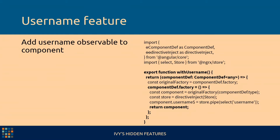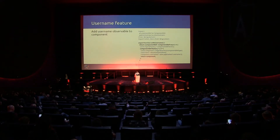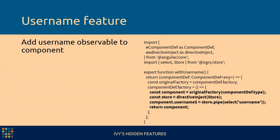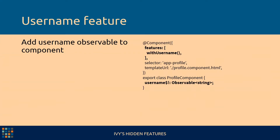Here's a simple one. We want to add the user name as an observable property to a component, so we create this feature. A feature is a function that returns another function that takes the component definition as a parameter — which is also a new thing from Ivy. A lot of these features will just wrap the component factory and add some more shared business logic. So in this one, we create a component instance from the original factory, then we inject the NGRX store, and we add to this component an observable property called user name. Then we return the component.